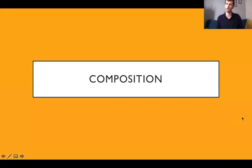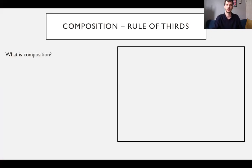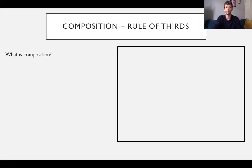We started with composition. Composition is essentially about how the different features of an image are arranged inside your frame, in order to create interesting communication among the different features of images. So one of the tried and tested ways of doing this is using the rule of thirds.